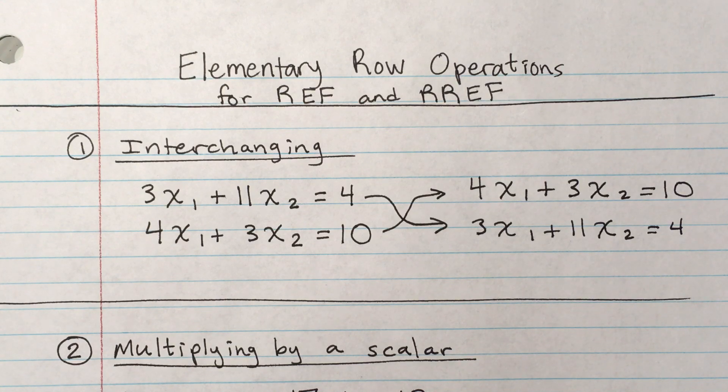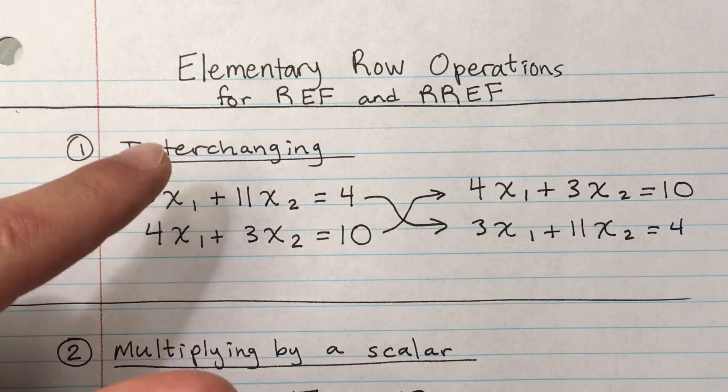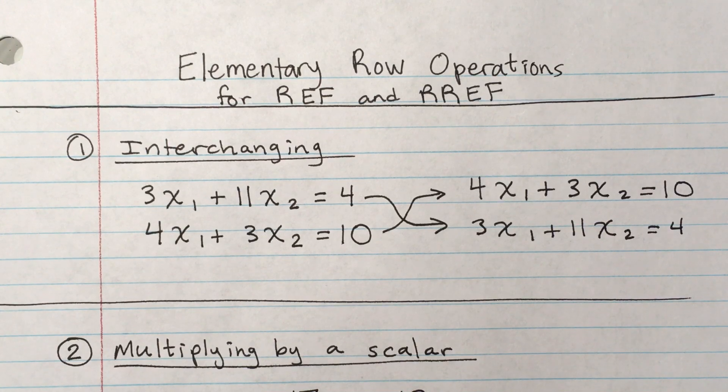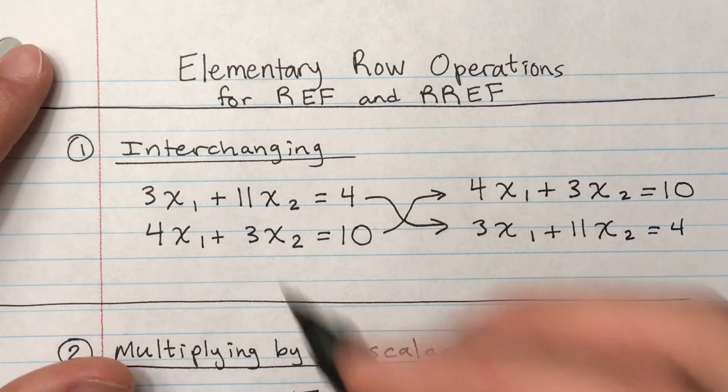So the first one is interchanging rows. So you're allowed to just switch the placement of each row and that would still leave you with an equivalent system.